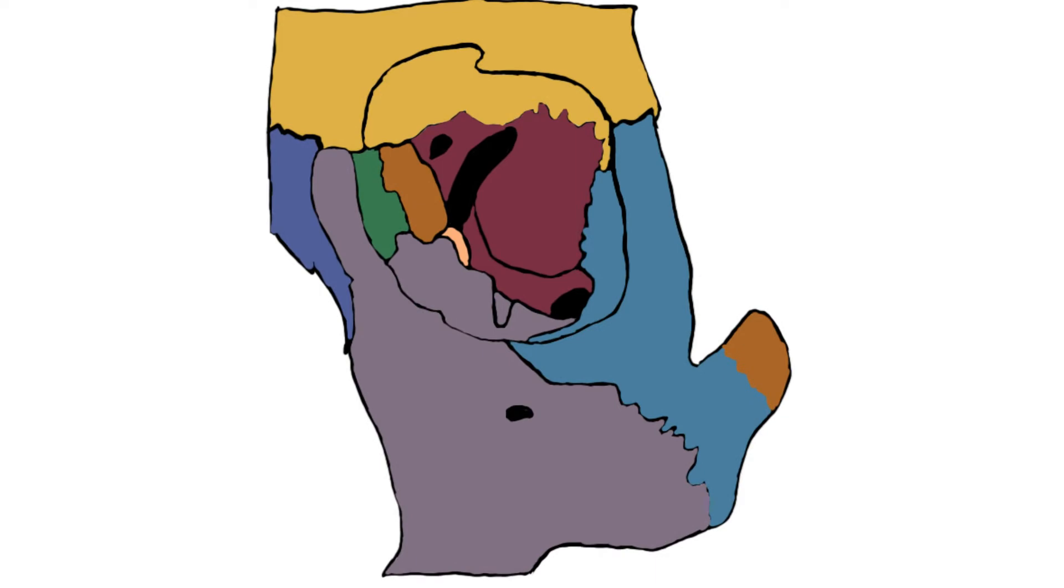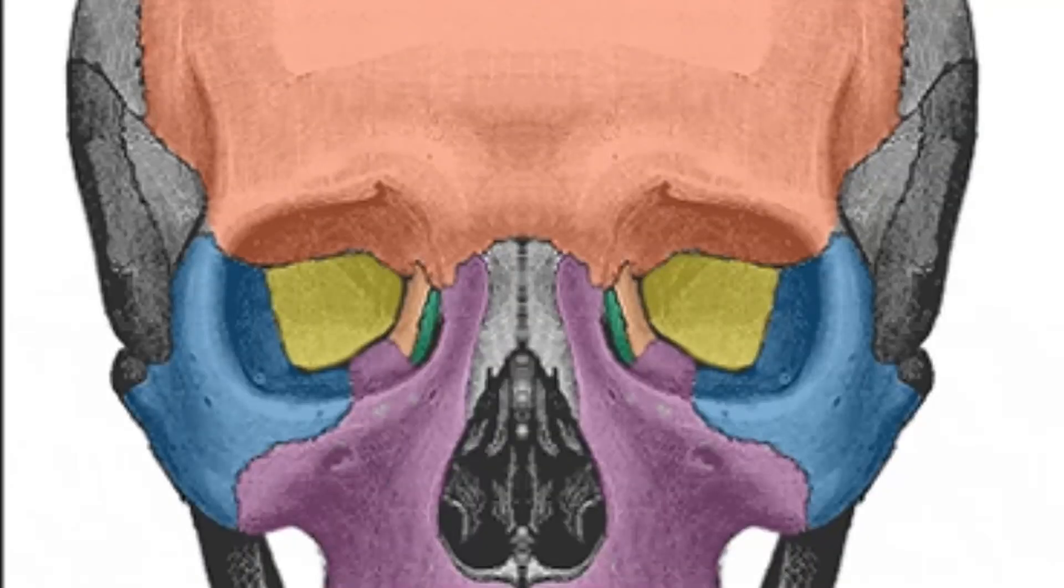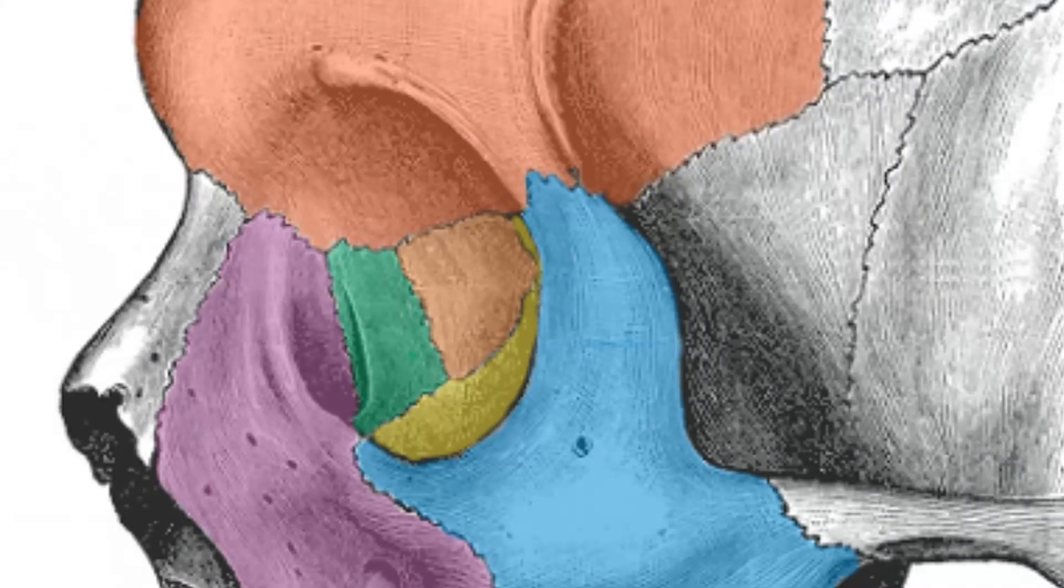Hey guys, it's Leila. Today we'll speak about the orbit. We'll speak about the bones involved and the contents. The orbit is a four-sided pyramidal cavity and it contains the eye. There are seven bones that form the orbit.